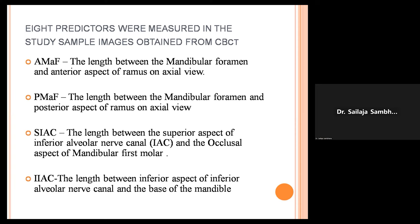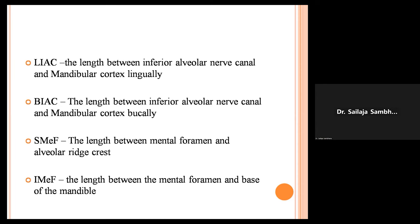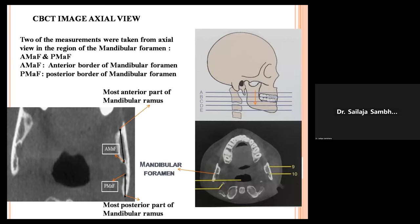The eight predictors were taken. The first two predictors were taken from the CBCT image in the axial view at the level of the mandibular foramen. AMAF measures the length between the anterior border of the mandibular foramen and the most anterior part of the mandibular ramus. PMAF measures the length between the posterior border of the mandibular foramen and the base of the mandibular ramus.